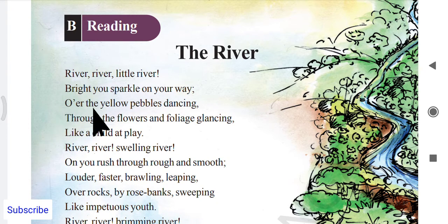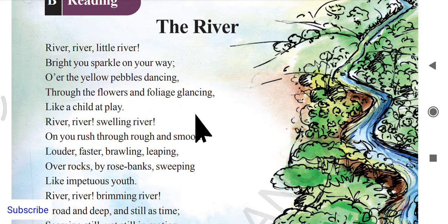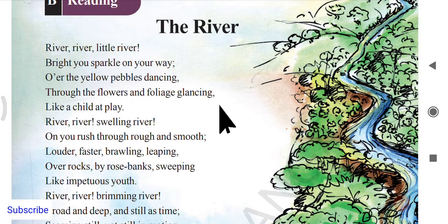Next: 'O'er the yellow pebbles dancing.' 'O'er' is a shortcut for 'over.' The river is going over the yellow pebbles — pebbles being different stones — just like dancing. Water flows above the stones as it passes. Then: 'the flowers and foliage glancing' — it is also going through flowers and foliage, meaning leaves.